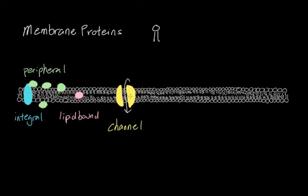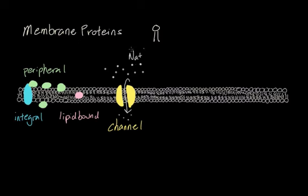Like the name implies, there's a channel or hole inside the protein that lets things pass through. For example, if there's an Na⁺ ion — a sodium ion — outside the cell, and the cell really needs those sodium ions to perform an important process, the channel protein allows these extracellular ions into the cell. Normally, sodium ions wouldn't be able to pass through the cell membrane by themselves.